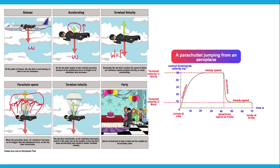When the parachute opens, air resistance increases dramatically because the parachute has a very large surface area, making it greater than the downward weight force. This causes the skydiver to decelerate. As the skydiver slows down, air resistance decreases again until it equals weight once more, and the skydiver reaches a slower second terminal velocity.